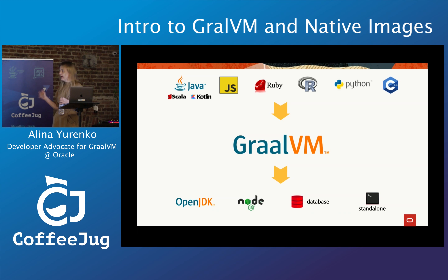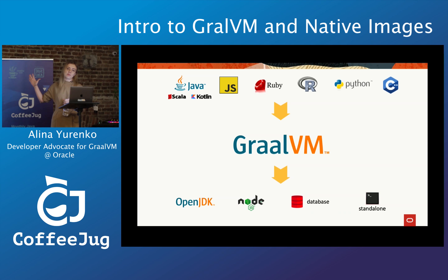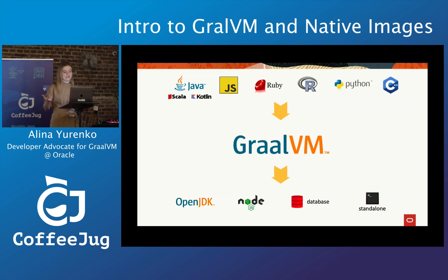The platforms where you can use GraalVM include OpenJDK, Node.js to run unmodified Node.js programs, embedding in databases to access more languages, and the native image capability that allows you to compile a Java program to a standalone binary and run it fully independent of any Java runtime.